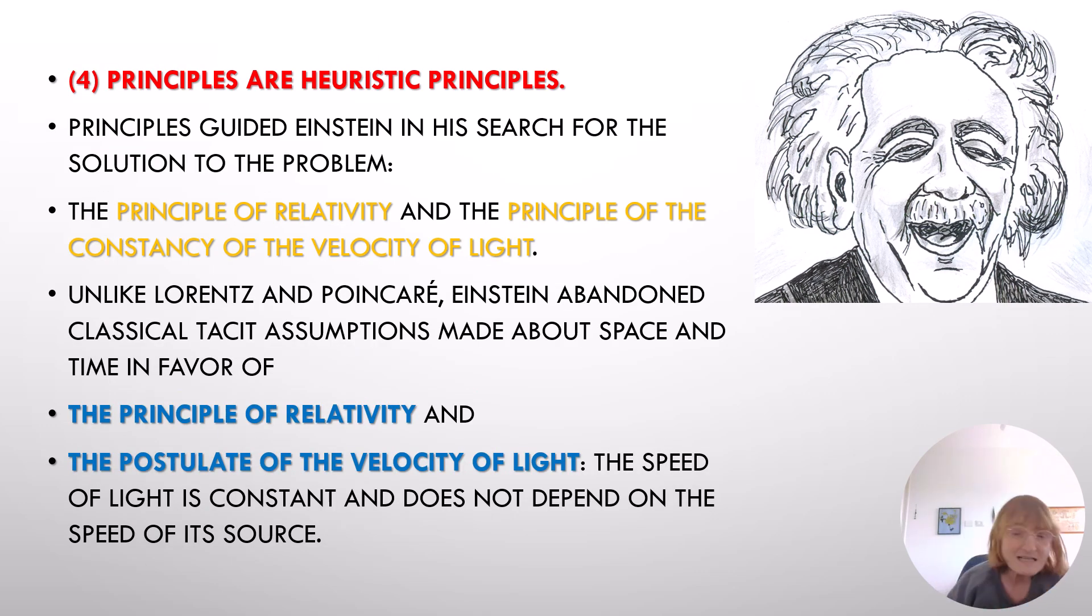Fourth, principles are heuristic principles. Principles guided Einstein in his search for the solution to the problem: the principle of relativity and the principle of the constancy of the velocity of light. Unlike Lorentz and Poincaré, Einstein abandoned classical tacit assumptions made about space and time in favor of the principle of relativity and the postulate of the velocity of light. The speed of light is constant and does not depend on the speed of its source.